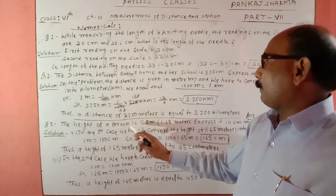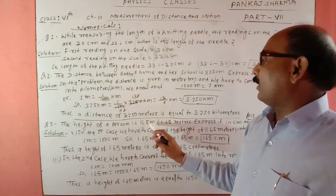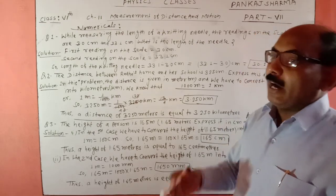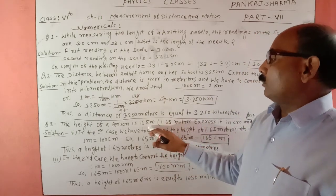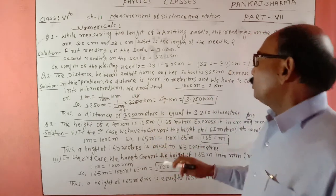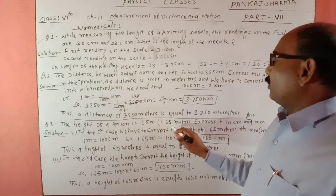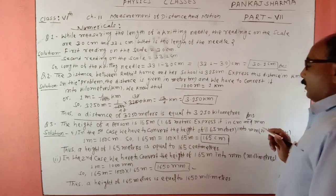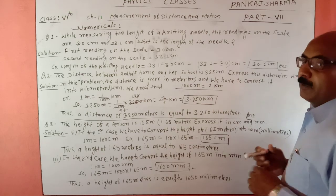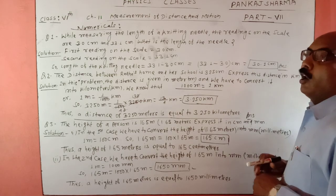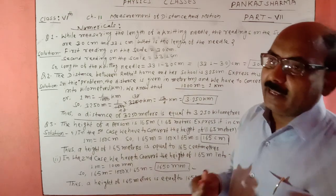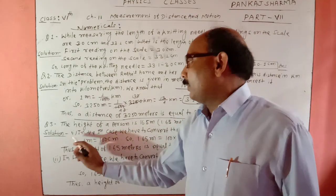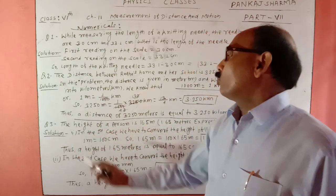Next question: The height of a person is 1.65 meter। इस व्यक्ति की ऊँचाई 1.65 meter है। Express it in centimeter and millimeter। इसे centimeter में और millimeter में व्यक्त करना है। Solution में number one में लिखते हैं।